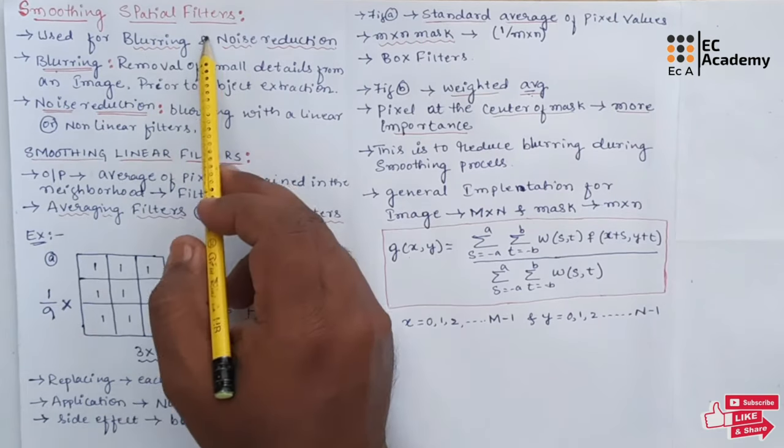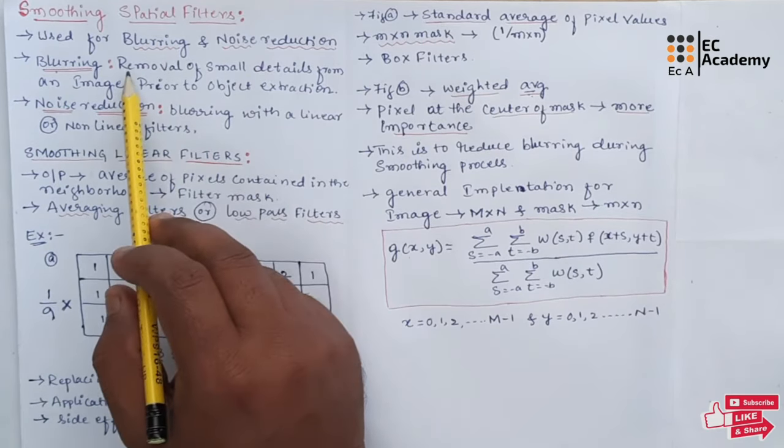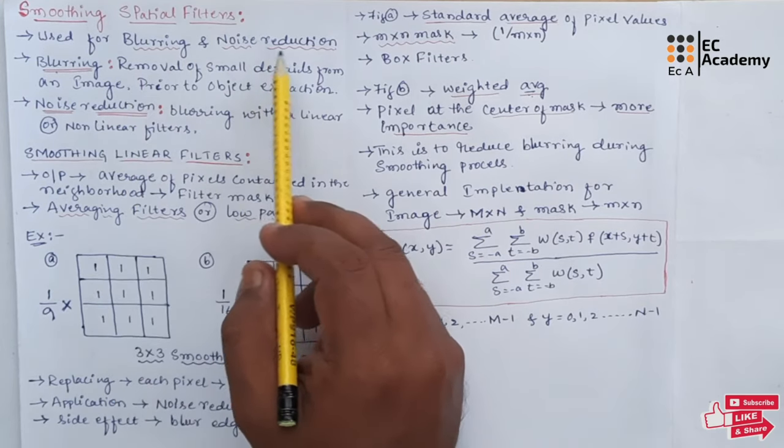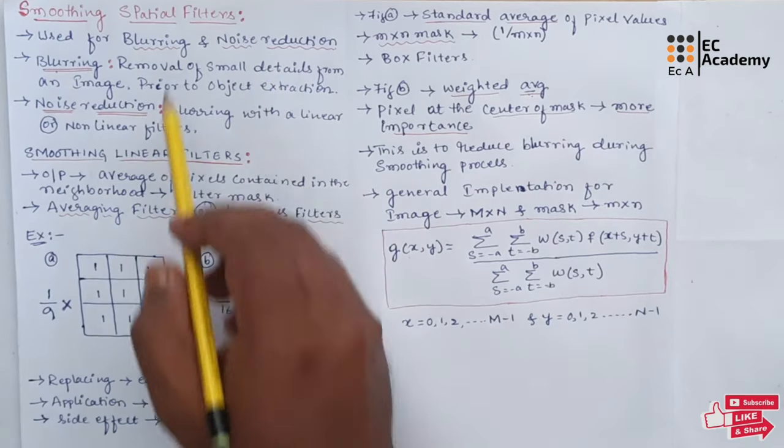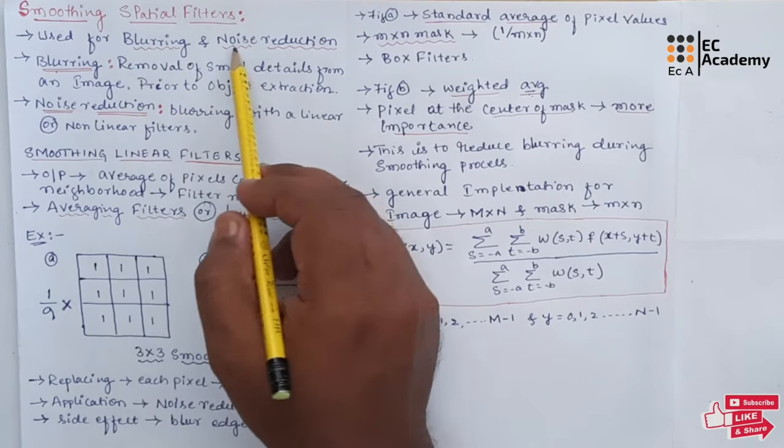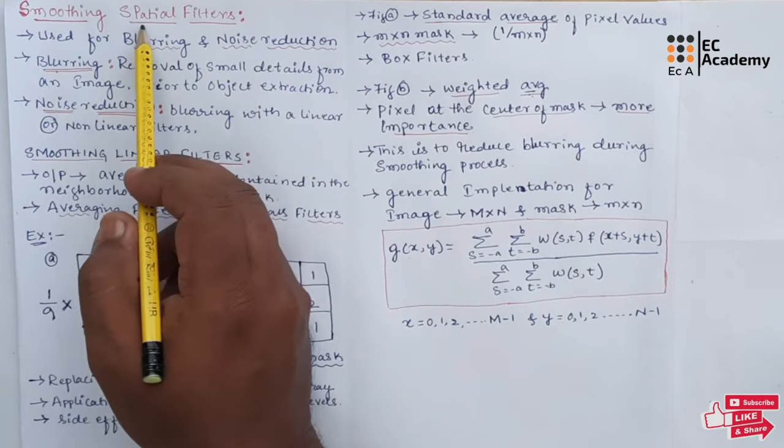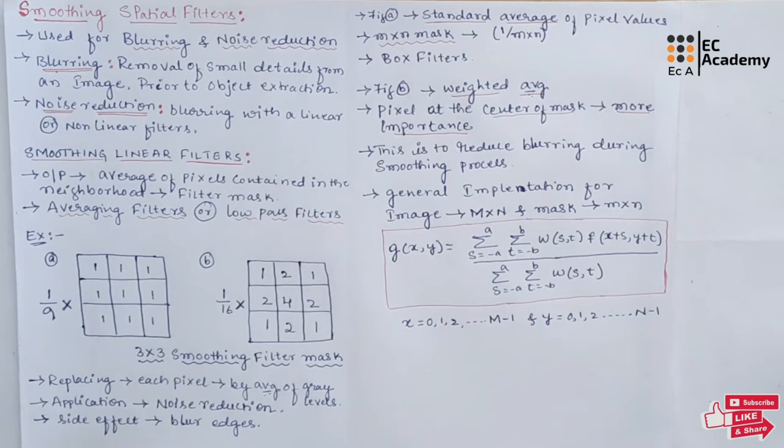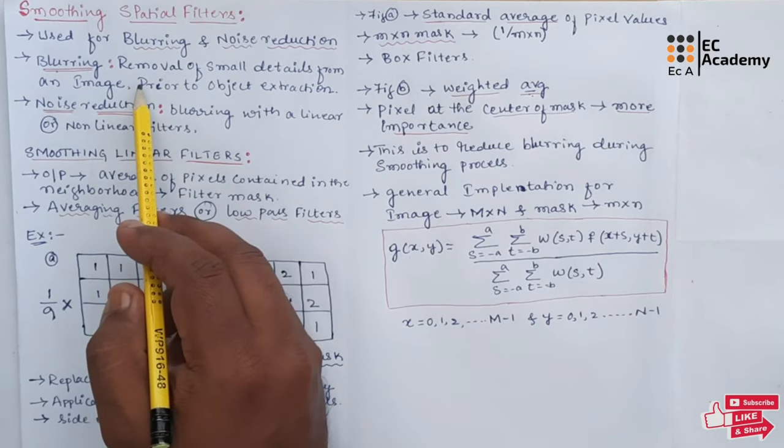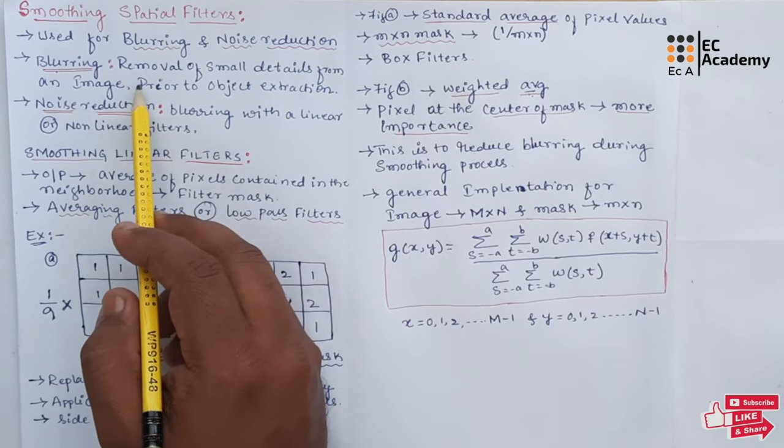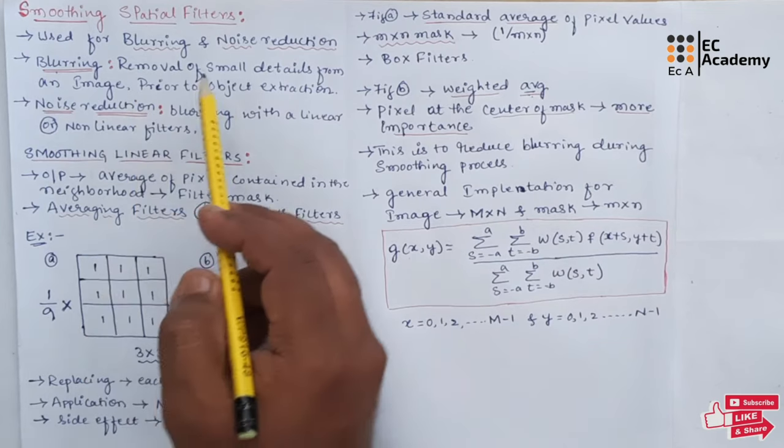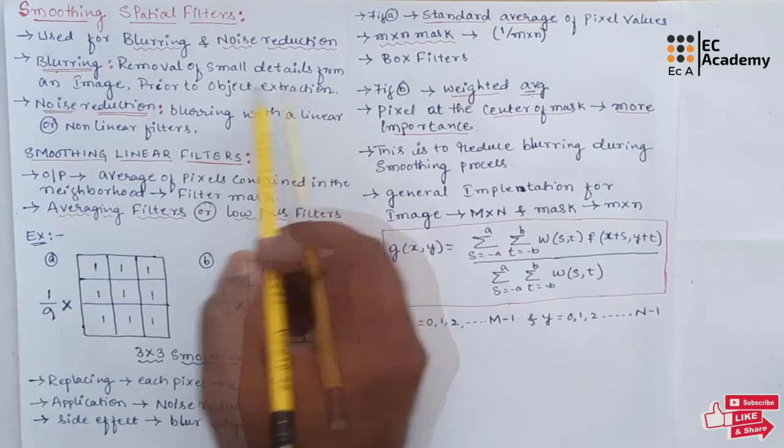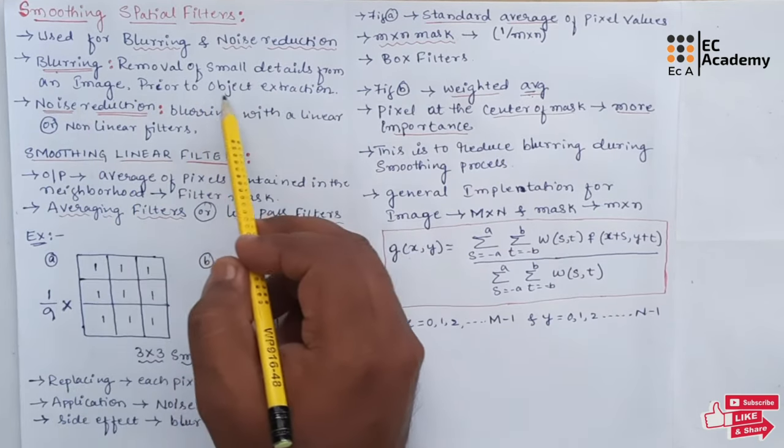Smoothing spatial filters are generally used for blurring and noise reduction. So to perform the operations like blurring and noise reduction, we can use smoothing spatial filters. Blurring is generally used in pre-processing such as removal of small details from an image prior to object extraction.